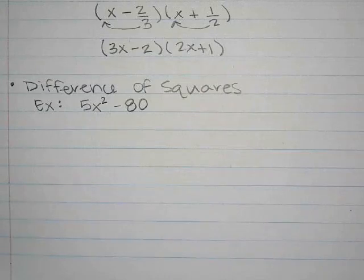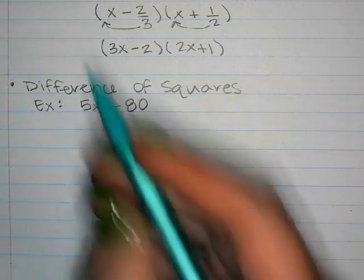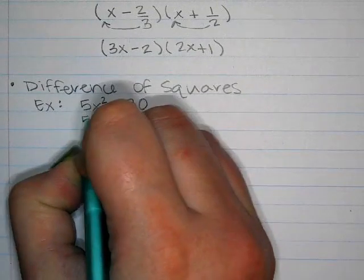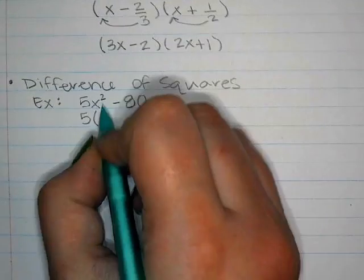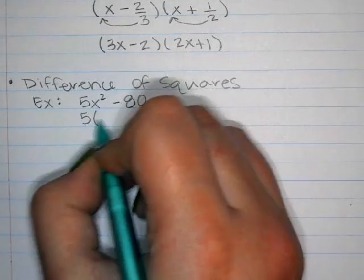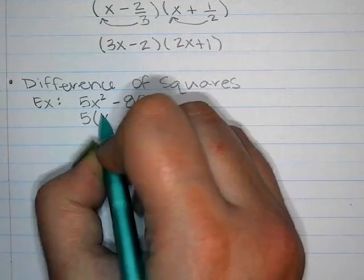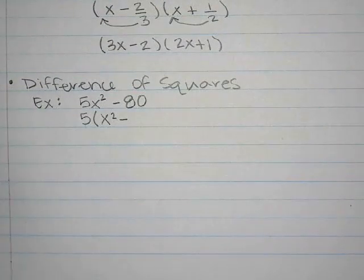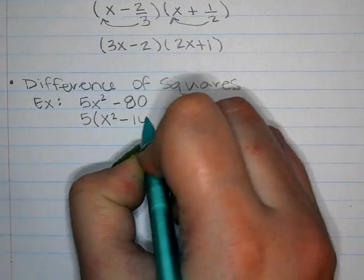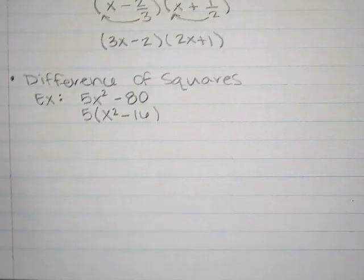If we take out the 5, we're left with 1 and x squared from the first term. With 80, dividing by 5 gives 16. So now we have 5 times (x squared minus 16). Now we have difference of squares inside.